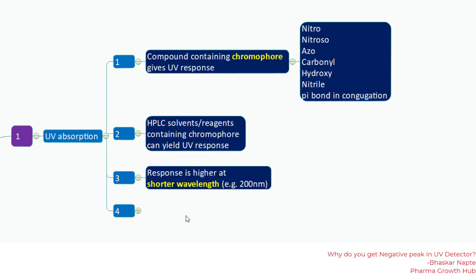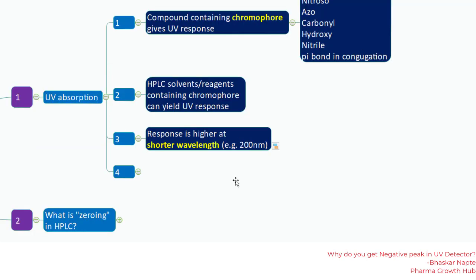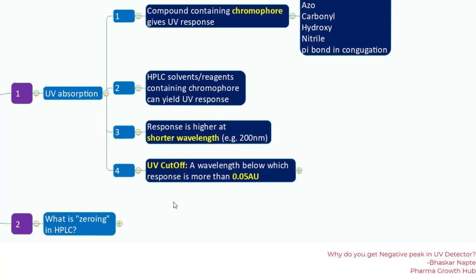The third important point is that the response is higher at shorter wavelengths. For example, at 200 nanometers the response is higher, while at longer wavelengths like 300 or 400 nanometers the response is minimum. This is because shorter wavelength light carries higher energy and can more easily cause excitation of electrons from the ground state to the excited state, yielding a higher response.